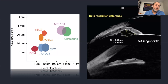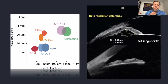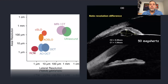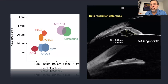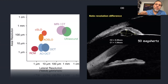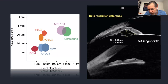Resolution comes hand in hand with acquisition speed — better resolution takes more time. Comparing anterior segment UBM with a 50 MHz probe versus OCT imaging, OCT provides better resolution, though ultrasound has greater penetration depth, allowing visualization of the iris and ciliary body in locations where regular OCTs cannot reach.